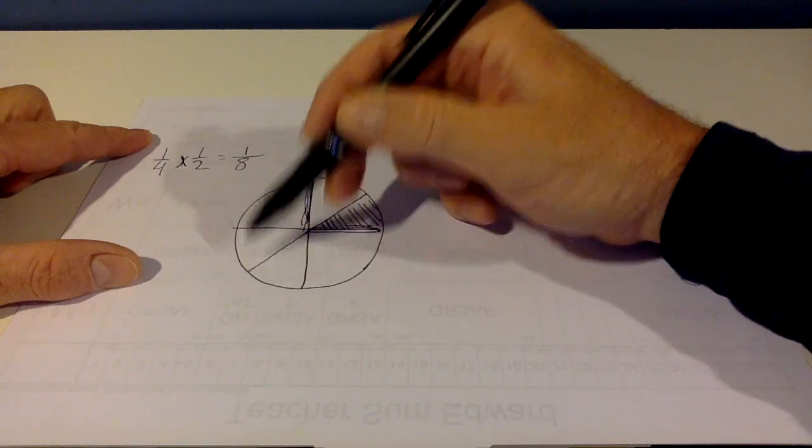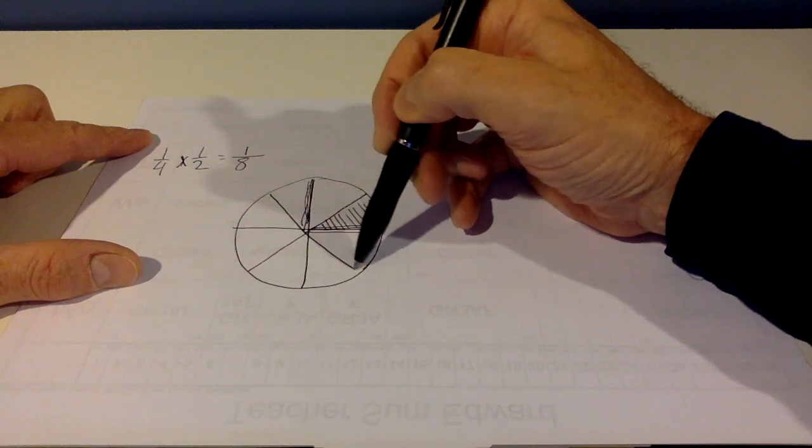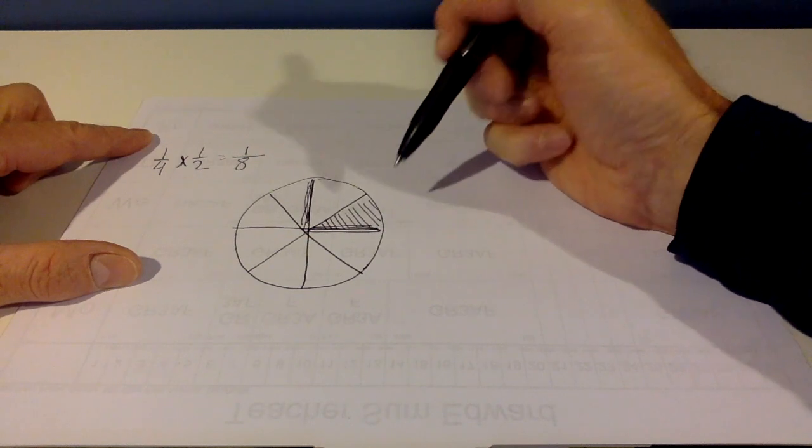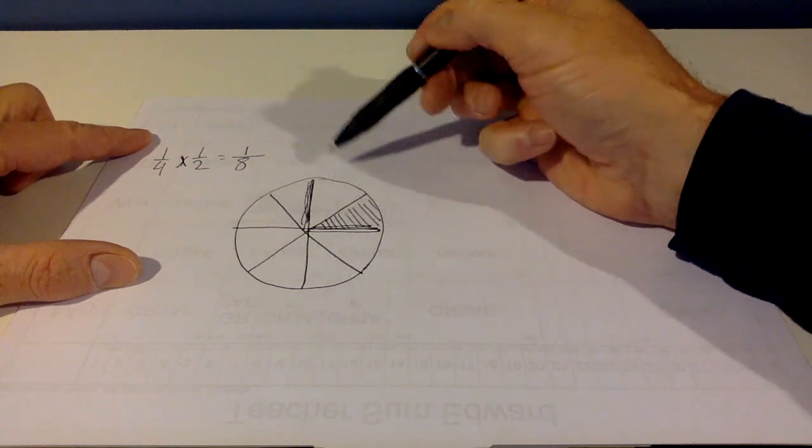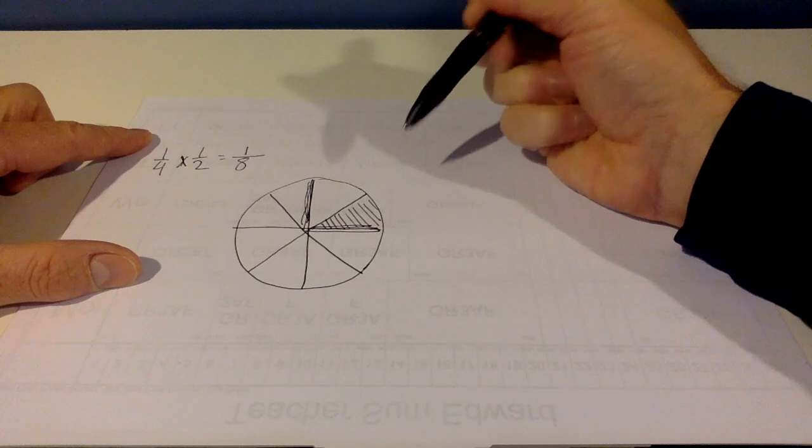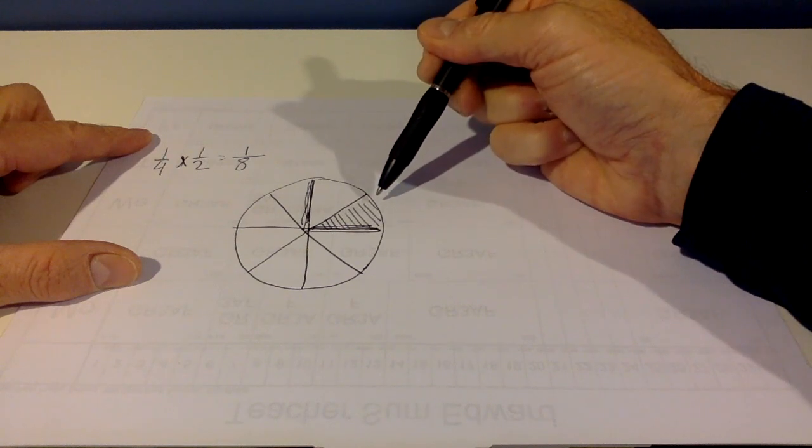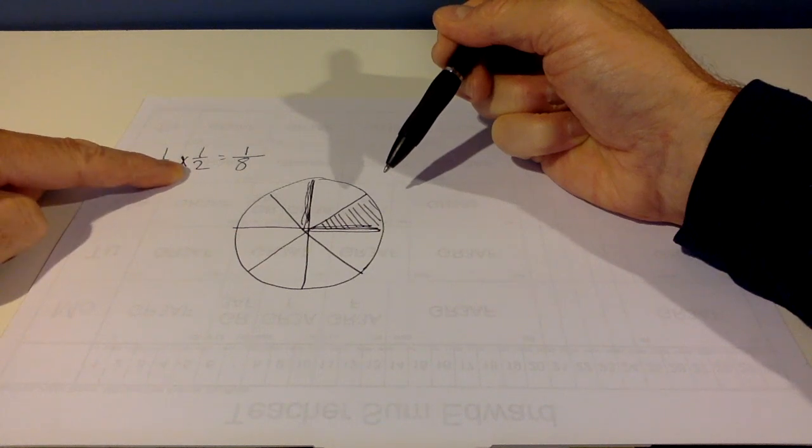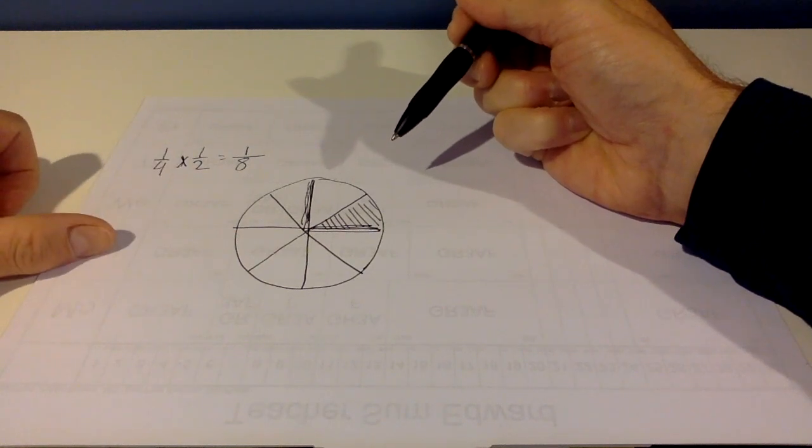And if we were to continue to draw out the roughly equal sections of that pie or cake, we would see that our end result of our multiplication is 1/8. Therefore, showing that 1/4 times 1/2 is 1/8.